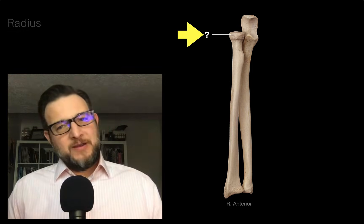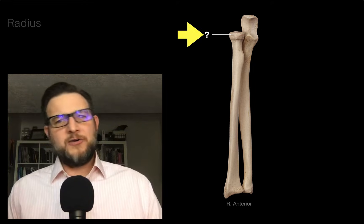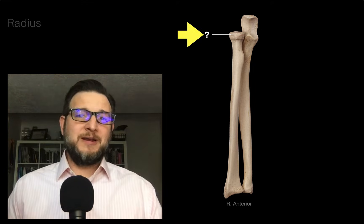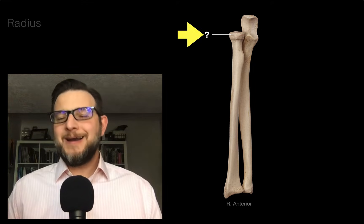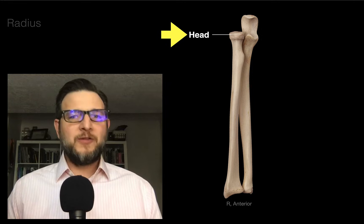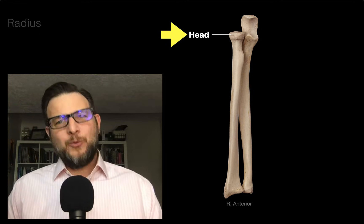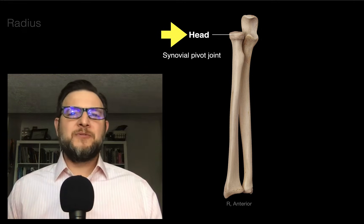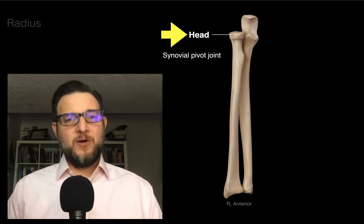On the radius, what do we call this proximal landmark? It's smooth and dome-shaped at the top. We call it the head of the radius, which forms a synovial pivot joint with the ulna.